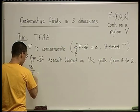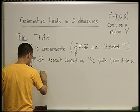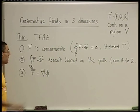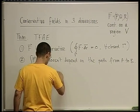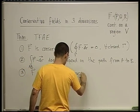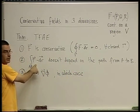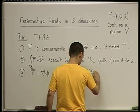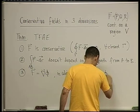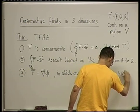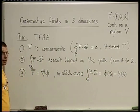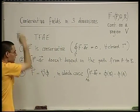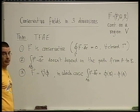Three: F has a potential function, meaning F is the gradient of some scalar function φ. In which case, we even know how to calculate the line integral: the integral over some path A to B of F dot dr equals the potential at B minus the potential at A. Again, nothing here hints that this is happening in three-dimensional space rather than on the plane.